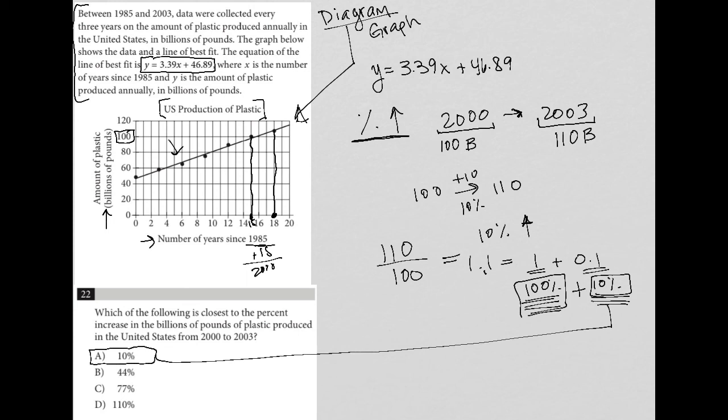There really isn't anything remotely close to it. Choice D may be a bit confusing because it says 110%.